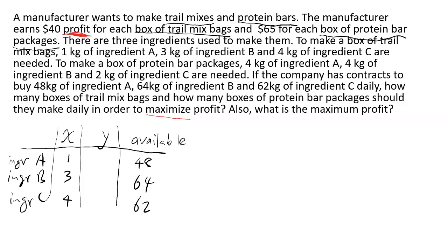If it's talking about ingredient B, never fill it in the ingredient A row — it has to go in the ingredient B row. To make a box of protein bar packages, 4 kilograms of ingredient A, 4 kilograms of ingredient B, and 2 kilograms of ingredient C are needed.